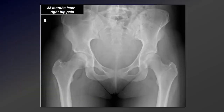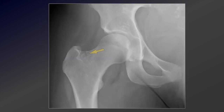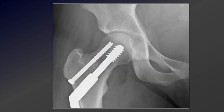She came back about 22 months later with right hip pain, and if you look closely at the right hip, you'll notice she's starting to develop a lateral femoral neck stress fracture. As we'll talk about in a few minutes, this is considered one of the high-risk areas for a stress fracture. She actually underwent internal fixation with a dynamic hip screw and a second partially threaded screw to maintain stability in this region and allow this to heal without displacement.